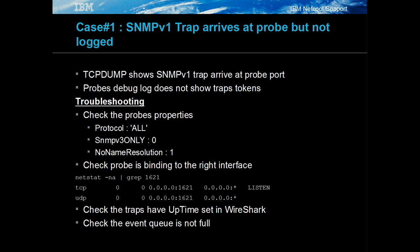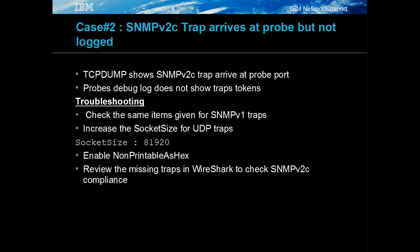A common cause is event processing and traps being discarded as the event queue is full. Sometimes the problem relates to SNMP V2C compliance. This type of problem can only be determined through analysis of the PCAP data following the identification of the missing traps. In this example for SNMP V2C traps, some traps are lost in the probe — check for the common causes.